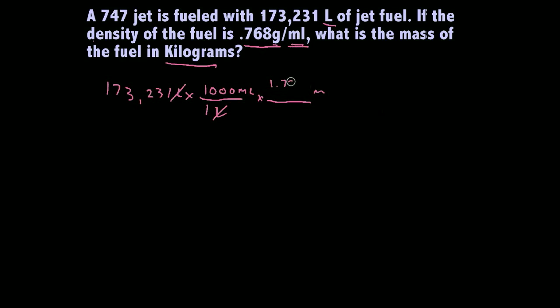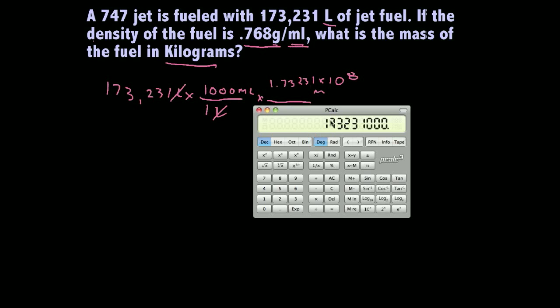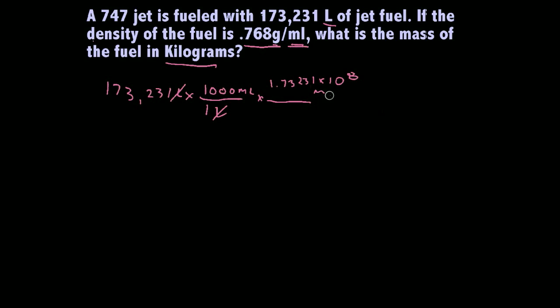So, we have 1.73231 times 10 to the eighth milliliters. Now, we just need to figure out our mass. Now, we're in the right units to be able to figure out our mass. We just need to keep in the back of our mind that it's going to give it to us in grams, and we need to have kilograms.